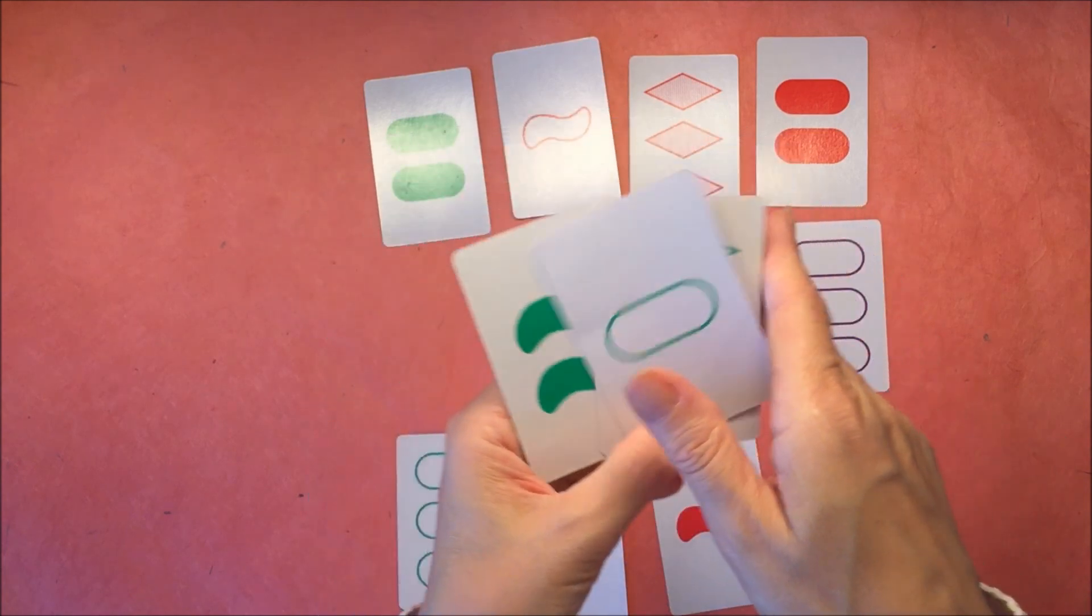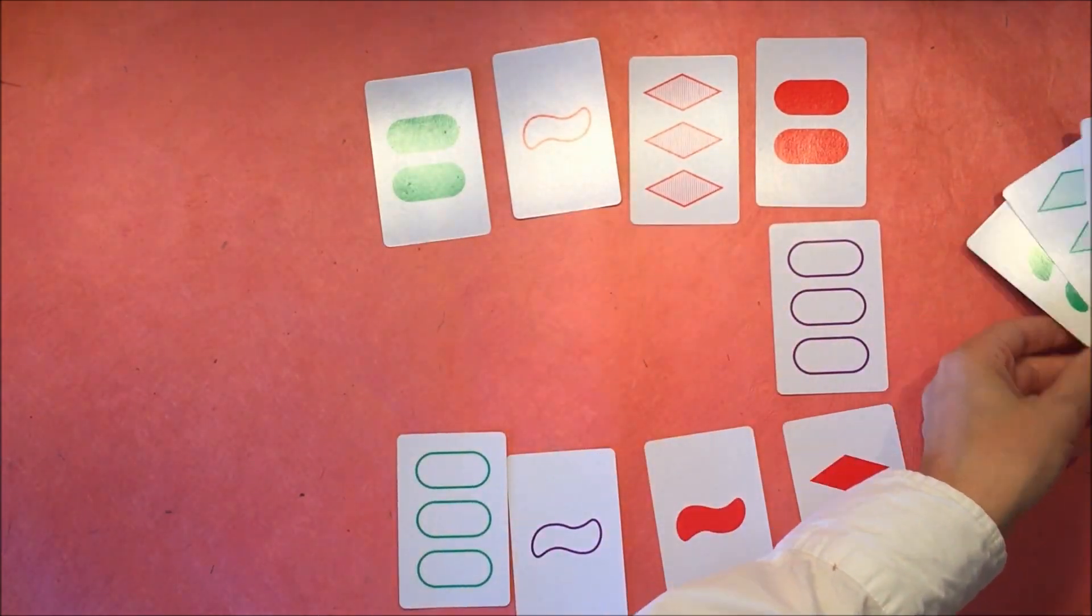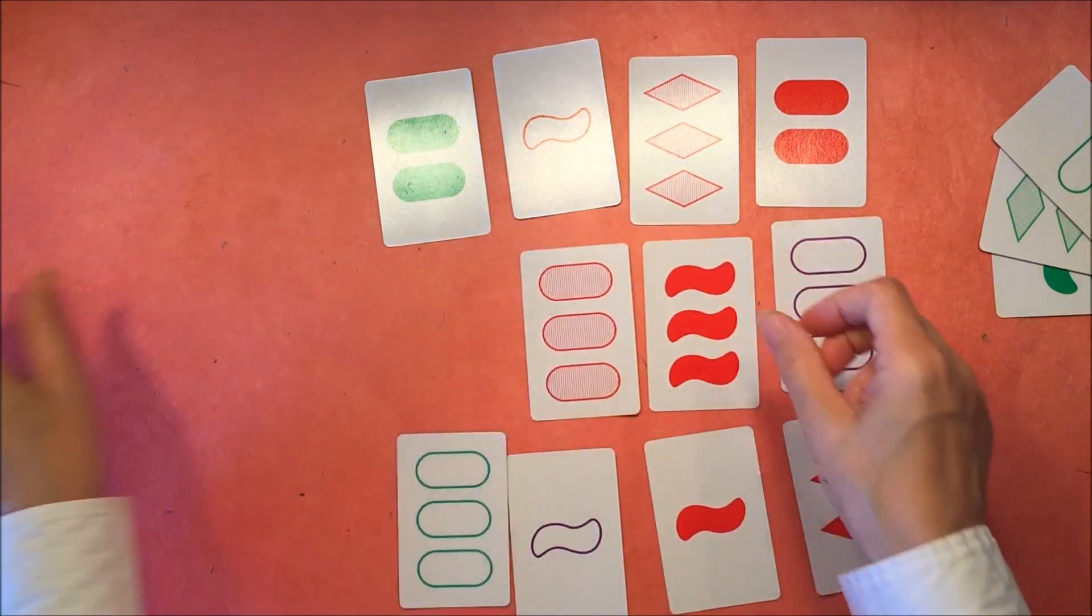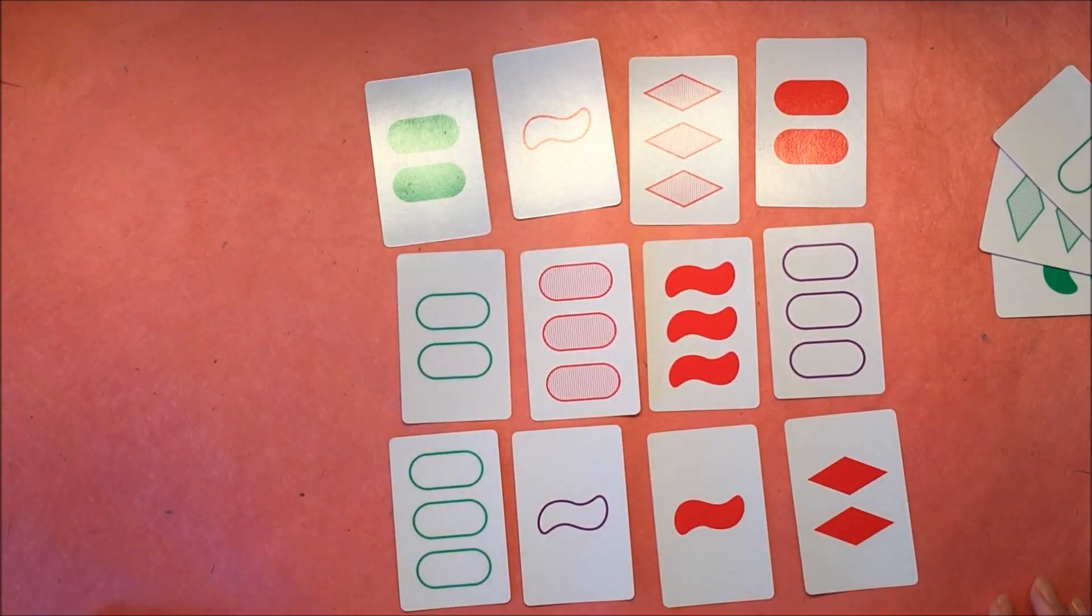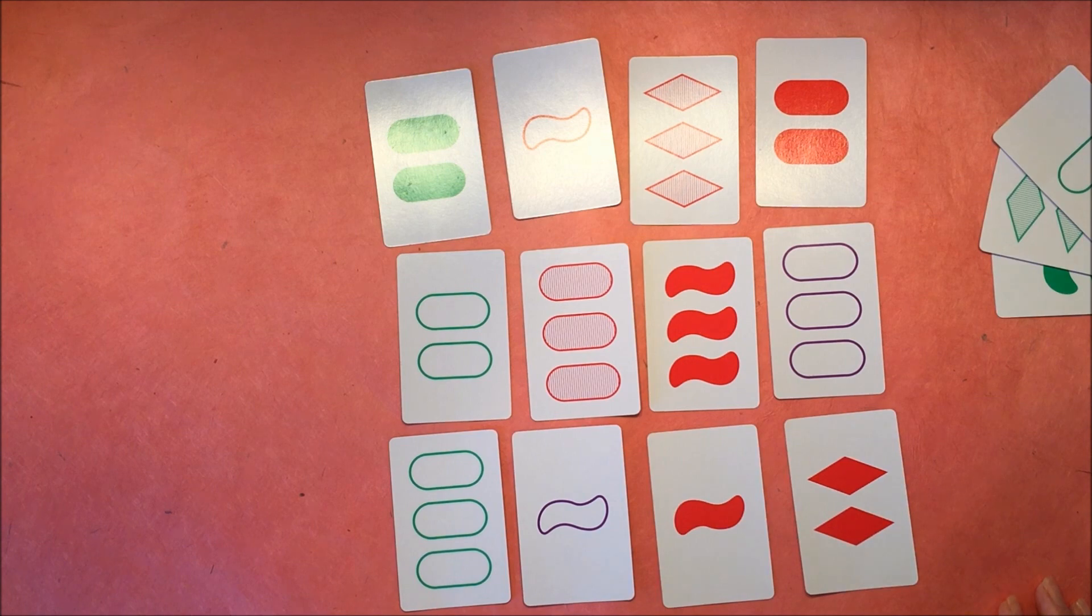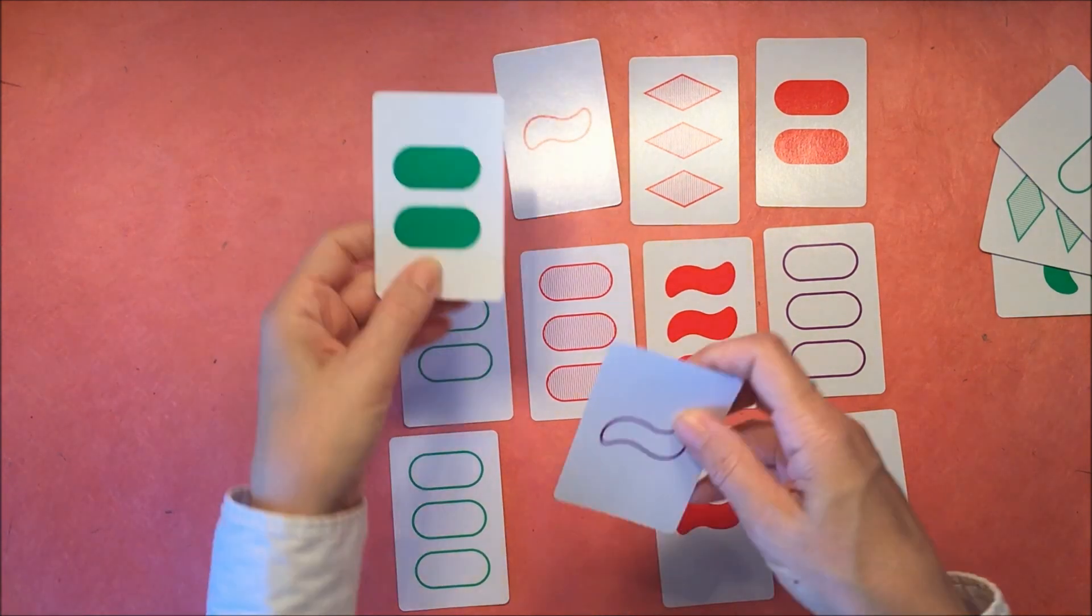So then you just put this aside, and whoever finds the set gets to keep those cards so that you can figure out at the end who has the most sets. So I went ahead and put another set of cards down, and now we just want to look for another set. And if you really can't find a set, then you can add three more cards to the group until you can find a set.